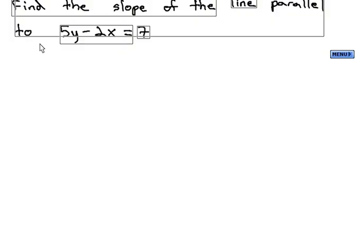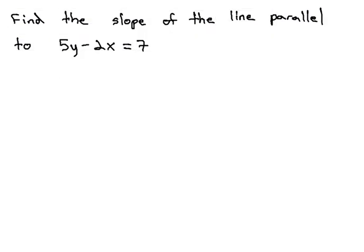Let me pull this down. We are going to find the slope of a line that's parallel to 5y minus 2x equals 7. Parallel lines, we know, have the same slope. So if we can identify the slope of this line, we can identify the slope of a parallel line.